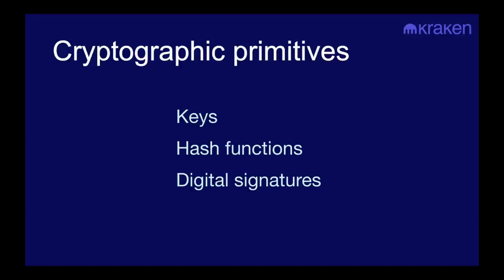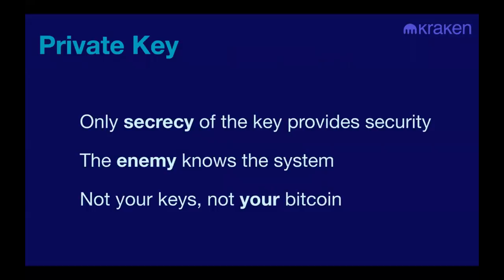Note that encryption is not used by the Bitcoin system. It's a completely transparent system — perhaps encryption will be used in the future, but currently there's no encryption used. As a Bitcoin user, the first cryptographic primitive you're likely to encounter is keys. You've probably already used passwords. A password is basically a private key, except that it's human-generated and human-readable, unless you have a password manager.